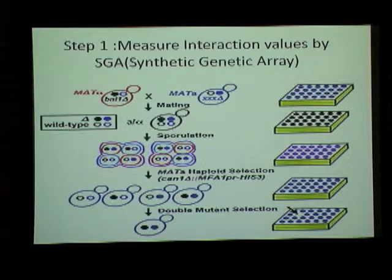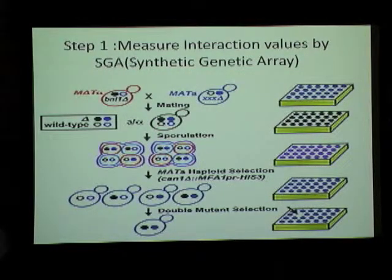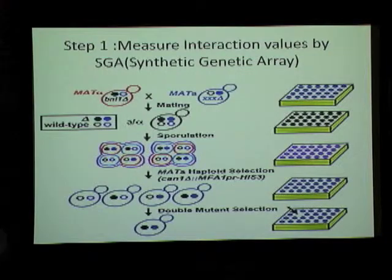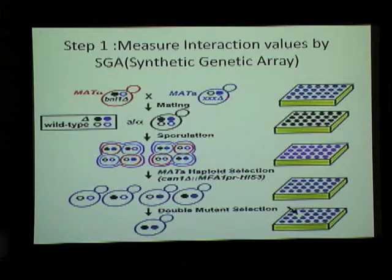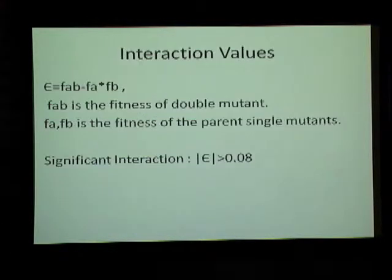The first step of the current methodology is to measure the interaction values between each gene. That is generally done in an experiment called SGA. Let's say we have two cells — this is A, this is B. They undergo gene knockouts and become single mutants. Then they are allowed to mate, and double mutants are formed. The correct double mutant is isolated. The fitness values SAB, SA, and SB are measured and put into this formula. This S0 gives the interaction value between gene A and gene B.